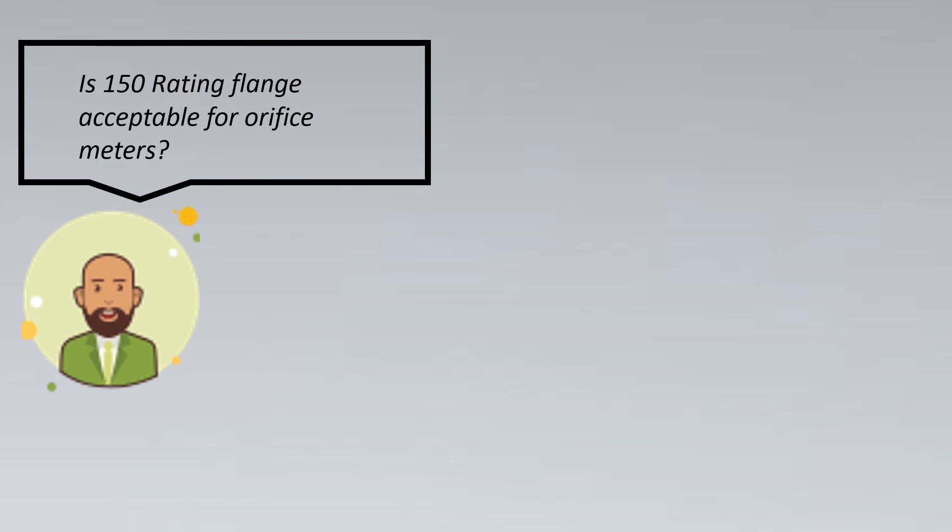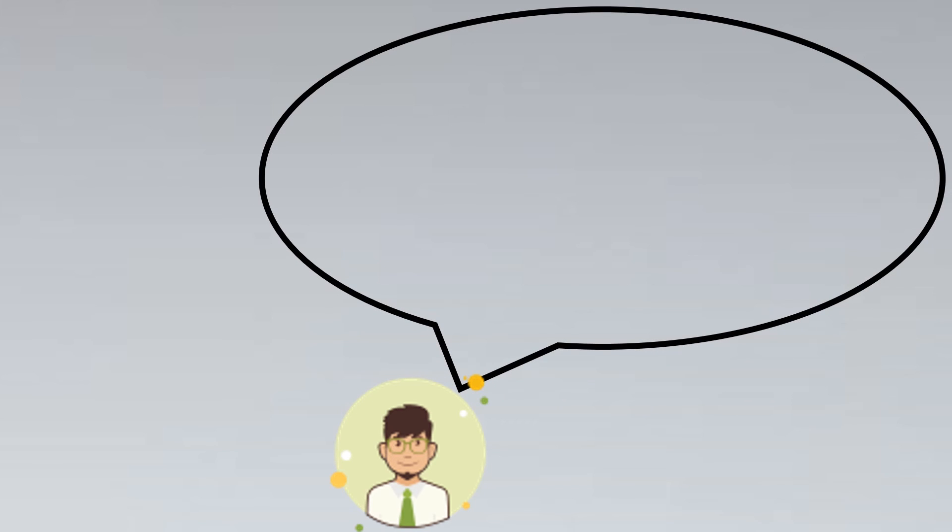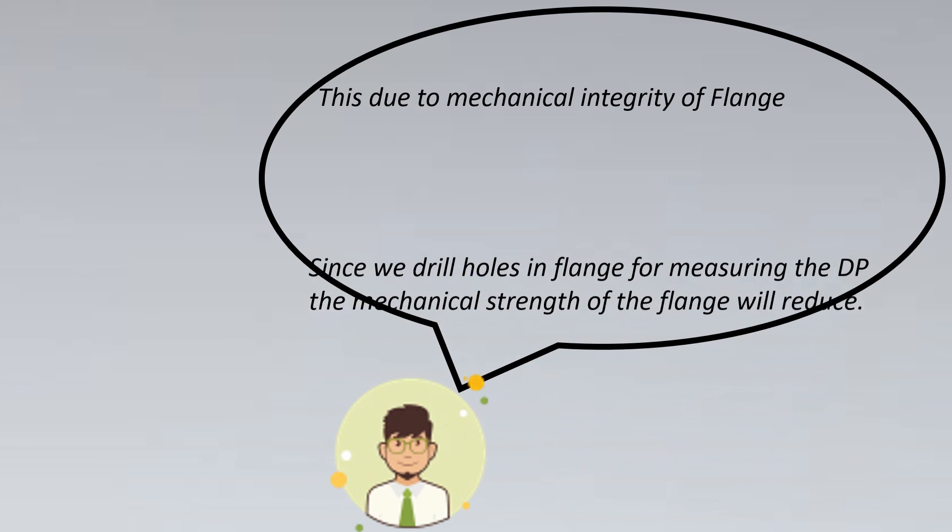Now the next question is: is 150 rating acceptable for orifice meters? You might assume that it could be acceptable, but the answer is no, it's not acceptable. Why? Let's look into why it is not acceptable. The first thing is that for orifice, we discussed that for flange tappings we need to drill the hole inside the flange, so due to mechanical integrity of the flange which gets affected by drilling, we cannot do this thing.